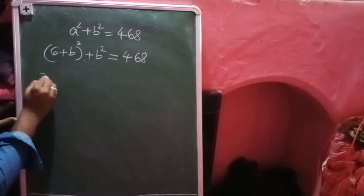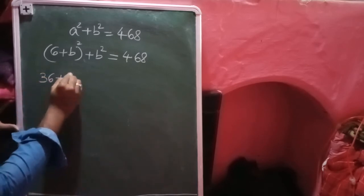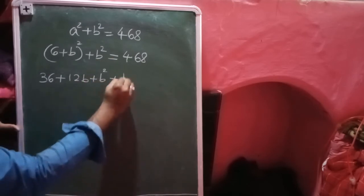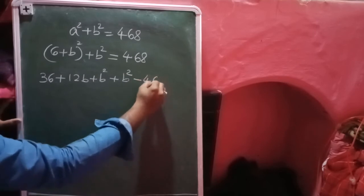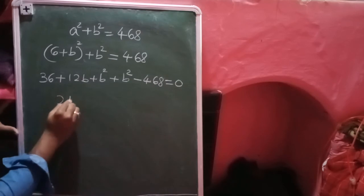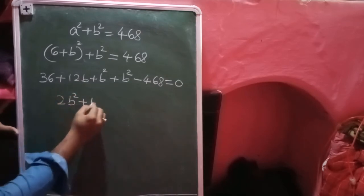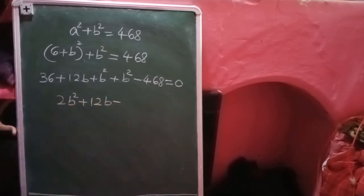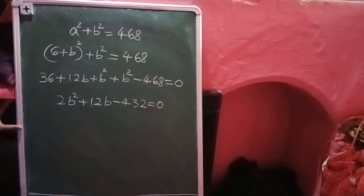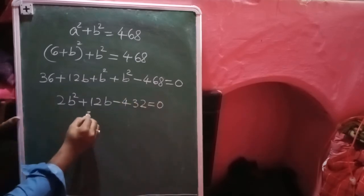Let us apply the identity: (a + b)² = a² + 2ab + b². So it becomes 36 + 12b + b² + b² = 468. Adding b² + b² gives 2b². So we have 2b² + 12b + 36 - 468 = 0, which means 2b² + 12b - 432 = 0.